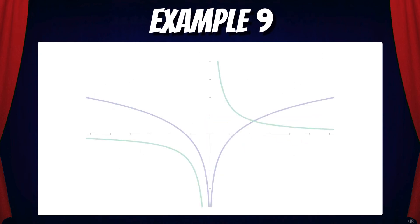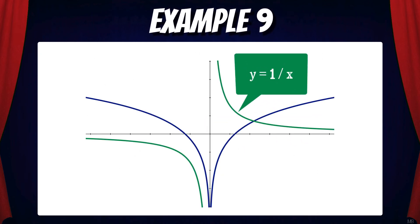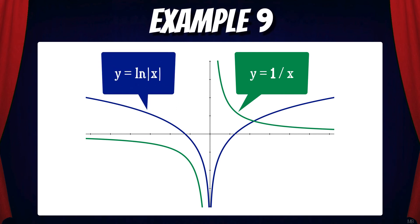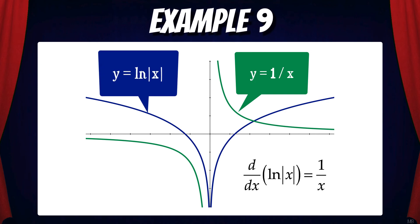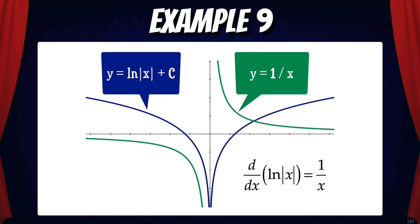Let's look at this graphically. The green graph is y = 1/x, and the blue graph is y = ln|x|. Here we can see that the derivative of ln|x| is 1/x. Note that technically I should have included a plus c with the natural log function, but remember when we take the derivative, the plus c will vanish, and we'll still be left with y = 1/x.